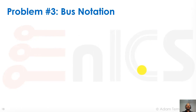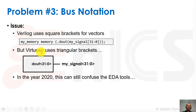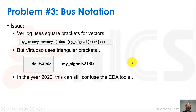Problem number three is bus notation. Verilog uses square brackets for vectors — we have this vector called my_signal, which is a 32-bit vector with square brackets 31 to 0, connected to this dout signal defined as an output or wire with 32 bits. Unfortunately, Virtuoso uses triangular angle brackets. So this block has a bus that's 32 bits but it's using triangular brackets, and the signal itself is also 32 bits but using triangular brackets. And these types of things can still confuse EDA tools, so we want to get rid of them.